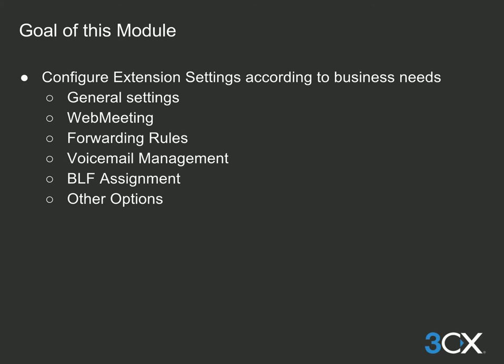By the end of this module we will have seen the various settings available for user extensions. We will go over the general settings of an extension, the web meeting parameters, the forwarding rules, the voicemail parameters, the BLF configuration, and the various other options such as restrictions which can be applied to an extension.